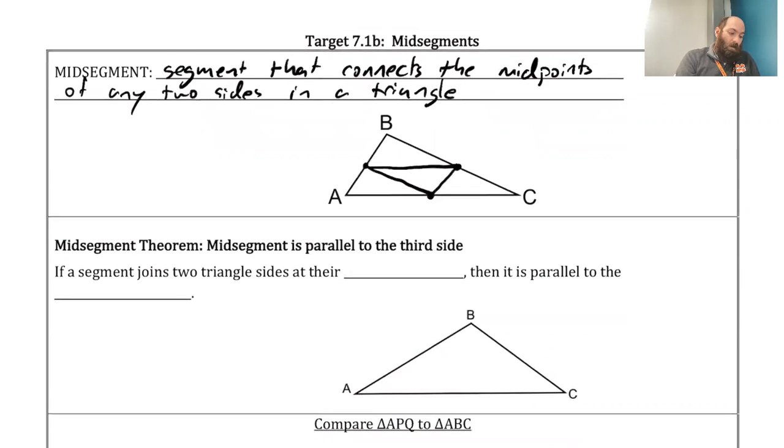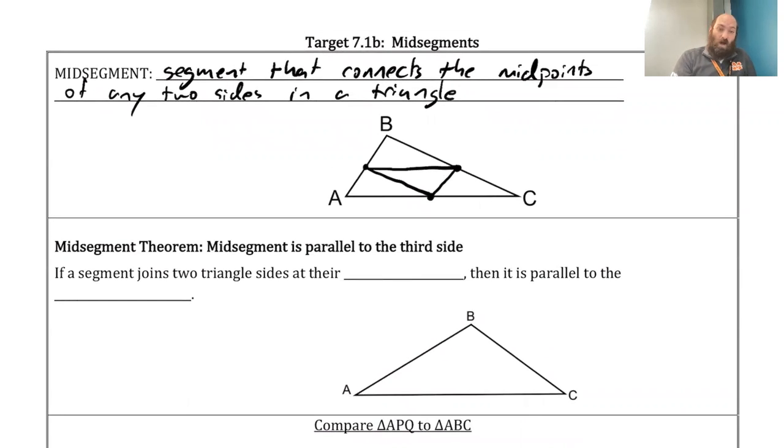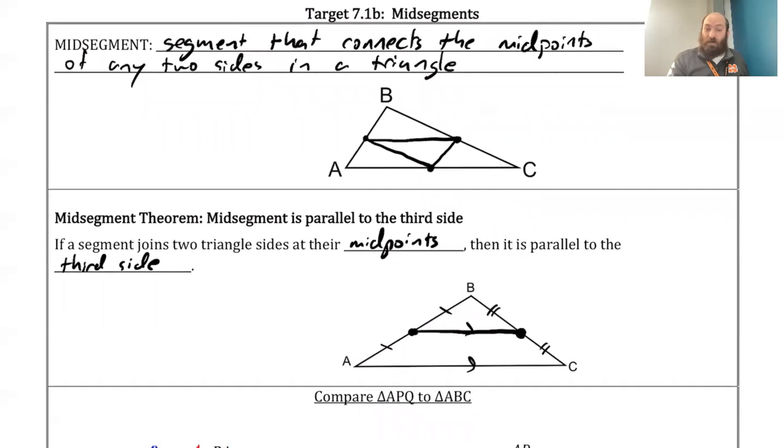So mid-segment theorem. If a segment joins two triangle sides at their midpoints, then it is parallel to the third side. So this actually ties back to what we did before. If I know for a fact that I have two midpoints, I connect them, and I can show that if I have these congruent segments like this, where this one equals this one and then this one equals this one, then I know I have two midpoints. So what I have then is that I can also treat it just like this, where they're parallel to each other.